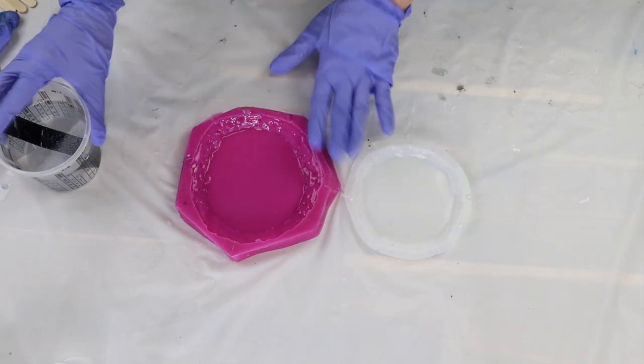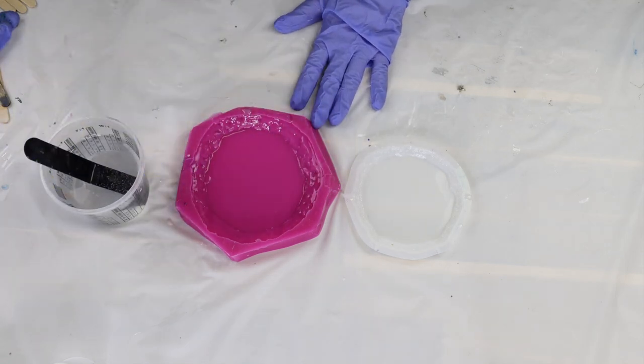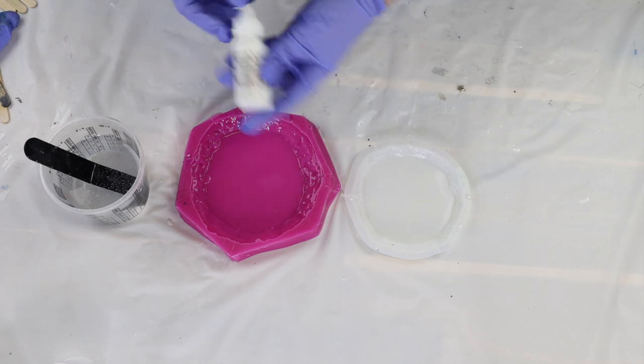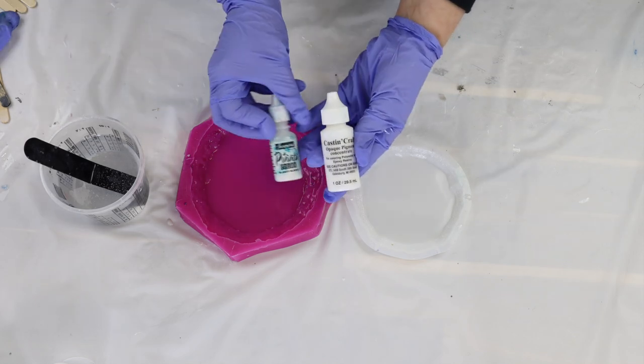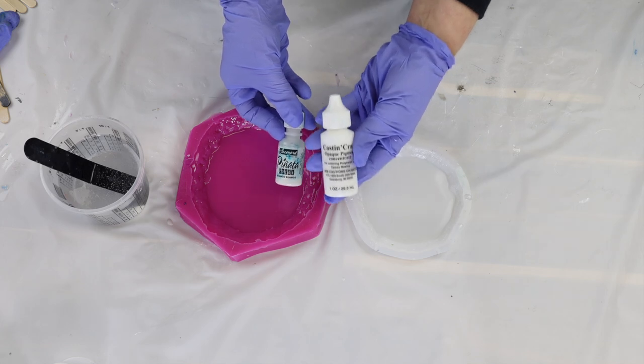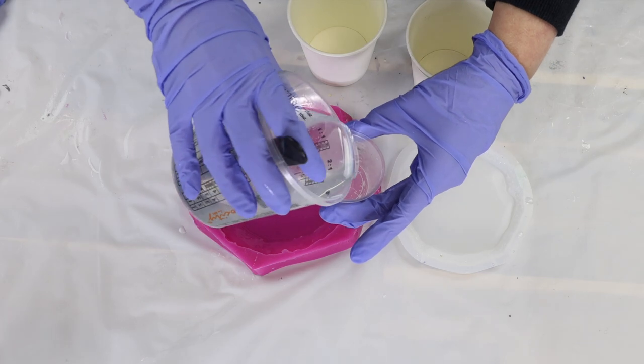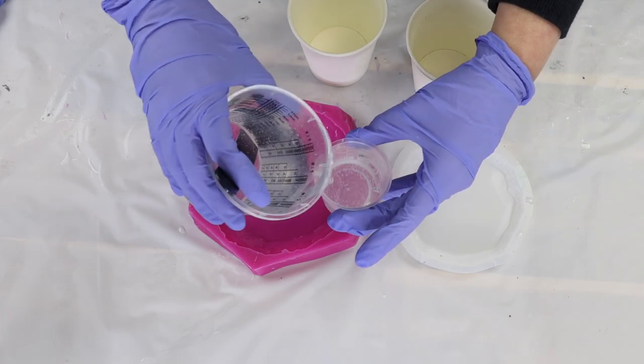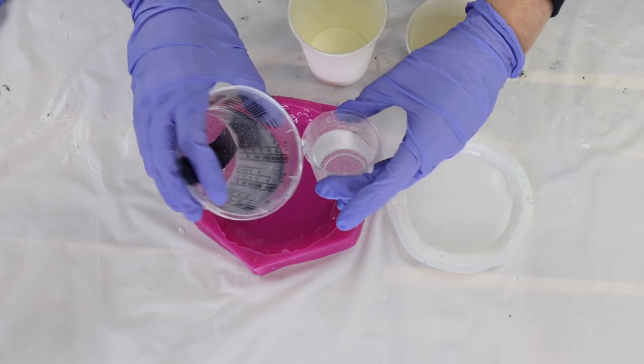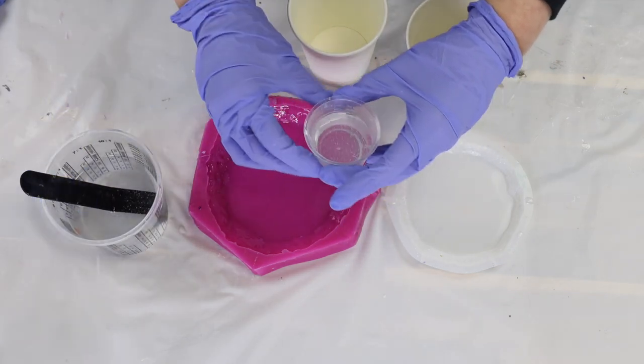The other suggestion was change up the resin, so I am changing up the resin today. I'm also going to be using some Casting Craft white. If you watched the first video you would have seen that I used the Pinata white which is a white alcohol ink, so this time I'm swapping that out and trying the Casting Craft white.